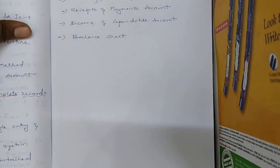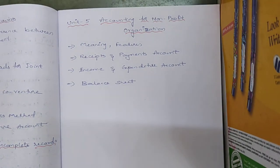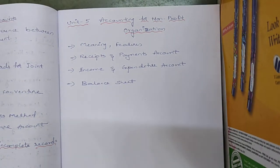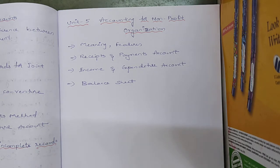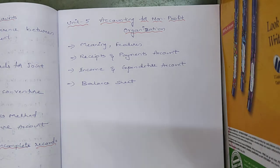Unit 5 is Accounting for Non-Profit Organizations, also called non-trading concerns. Topics include: meaning, features, how to prepare the receipts and payments account, how to prepare the income and expenditure account, and how to prepare the balance sheet. These are all the topics under Unit 5. Totally, you have five units.